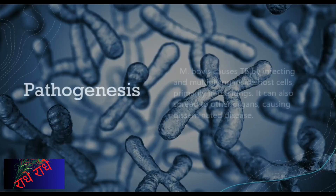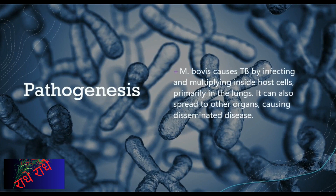M. bovis is a bacterium responsible for causing TB, a highly contagious illness. It develops and expands inside host cells, mainly in the lungs. Other organs may become targets for infection, prompting more severe signs and the risk of fatality if it remains untreated. TB is a disease that can be both prevented and treated, making early recognition and management essential.